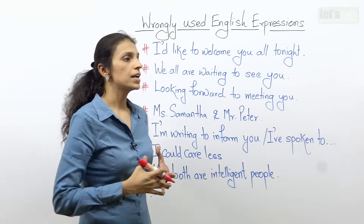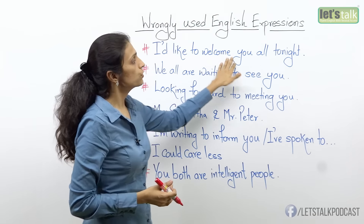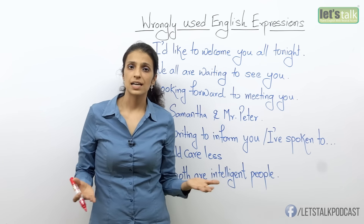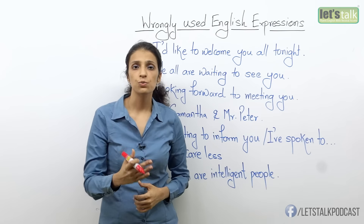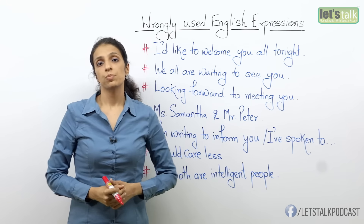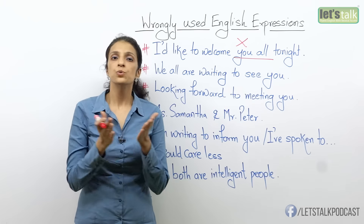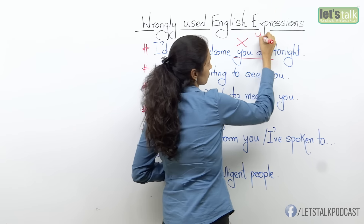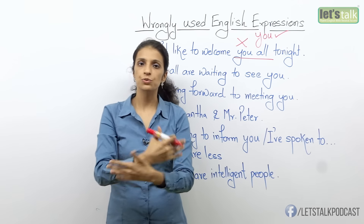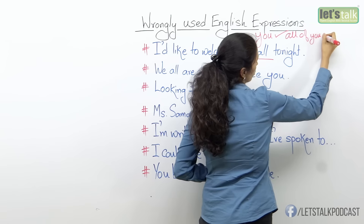My first one: imagine I am welcoming my guests or probably my colleagues to a dinner tonight and I say, 'I'd like to welcome you all tonight.' Now think of it — 'you all.' You is a pronoun which stands for singular and plural. So if I say 'you,' it could mean just one person, or if I look at a class and say 'you,' it is plural as well. So 'you all' is absolutely incorrect. You have two ways to put it: either you say 'I'd like to welcome you,' or you could say 'I'd like to welcome all of you.' But there is nothing like 'you all' — that is incorrect.